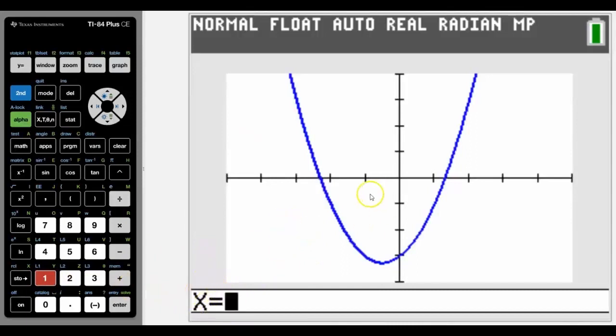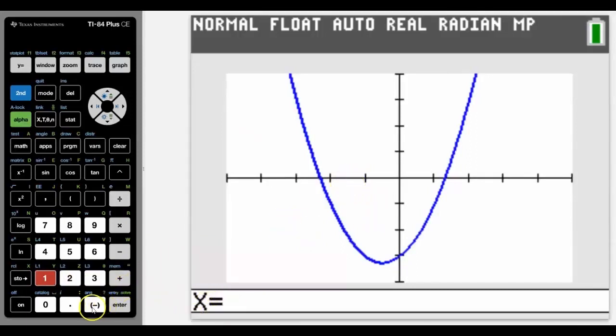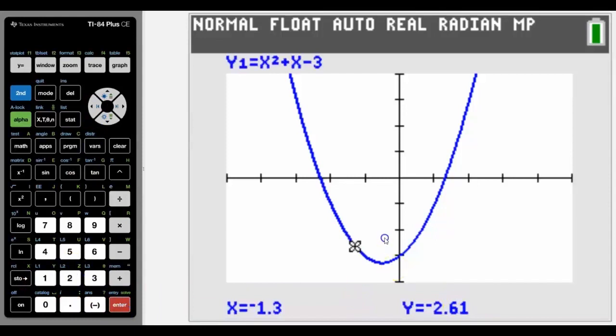Value will return a y value for a particular x value so in this case let's look at say negative 1.3 and it will return the suitable y value at that point on the curve.